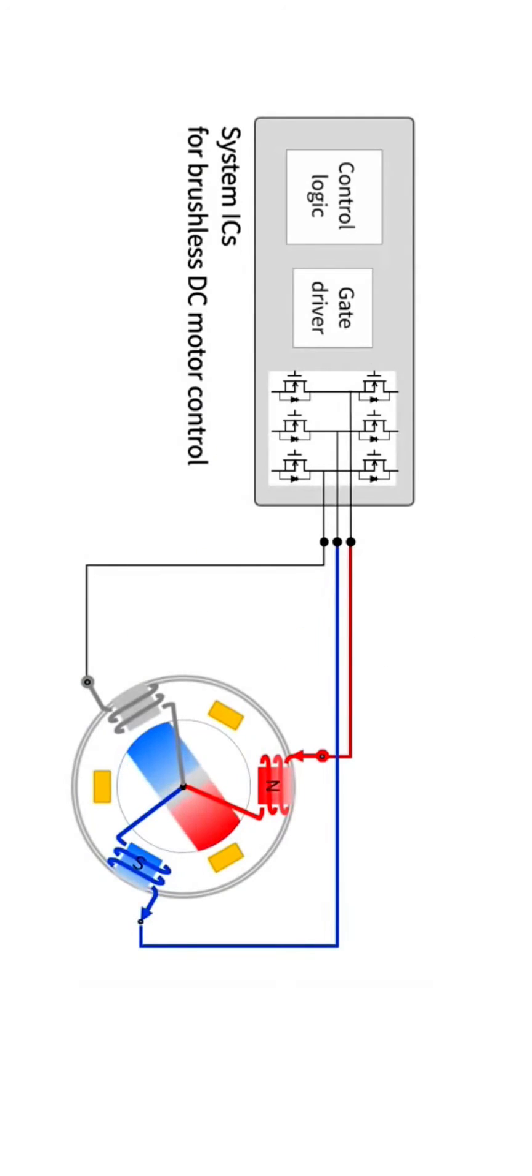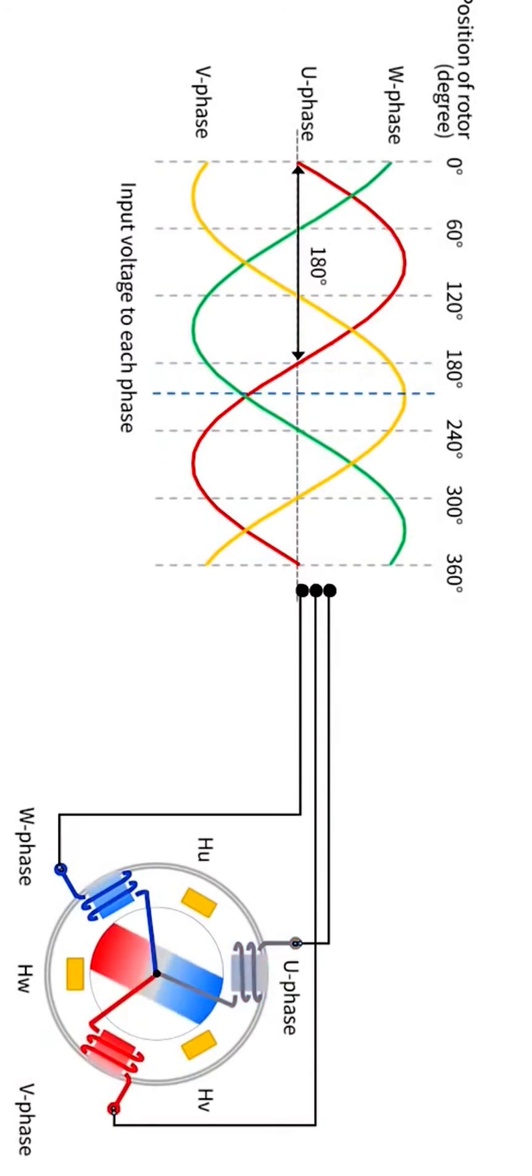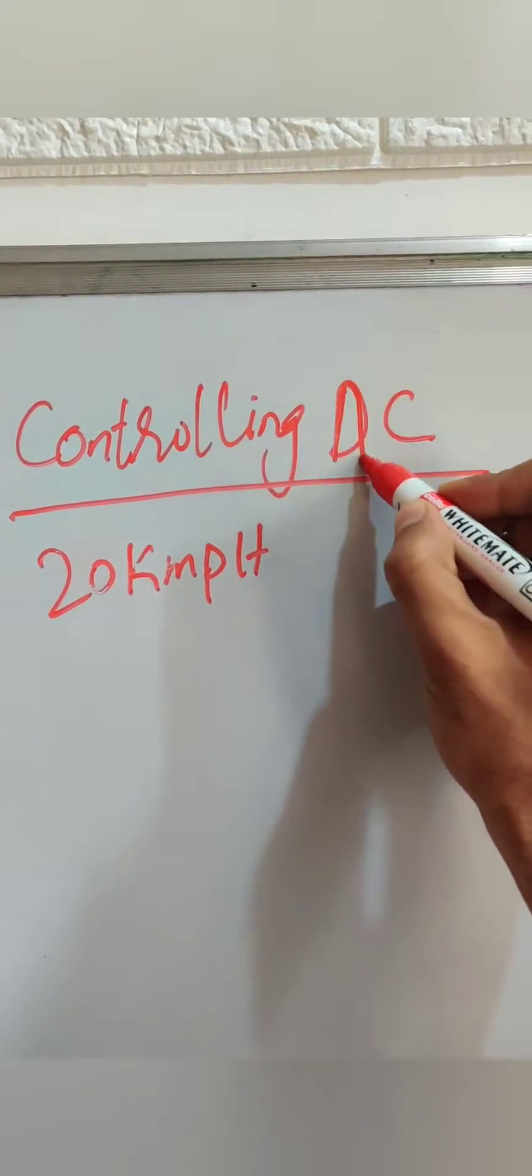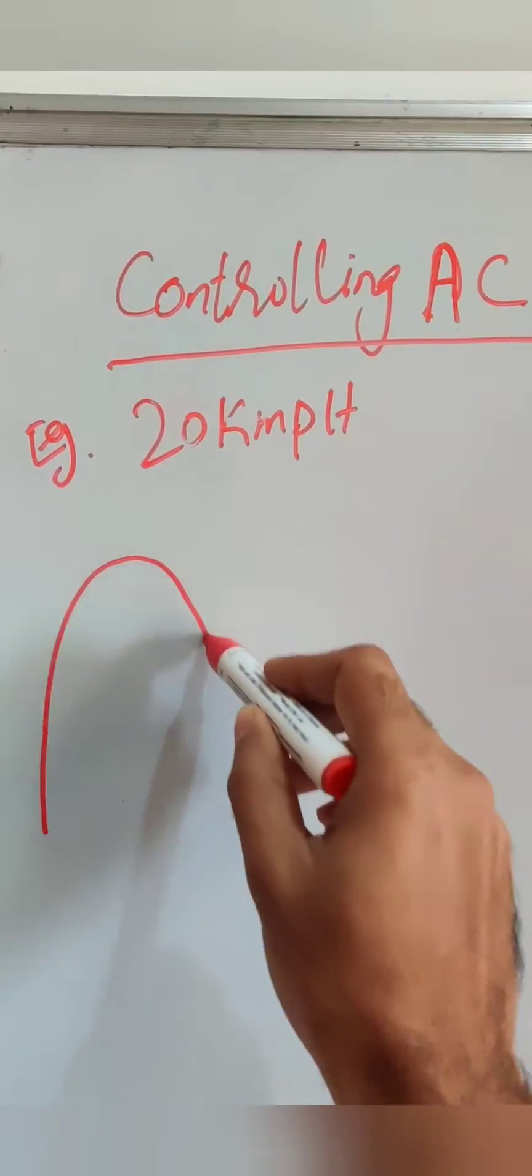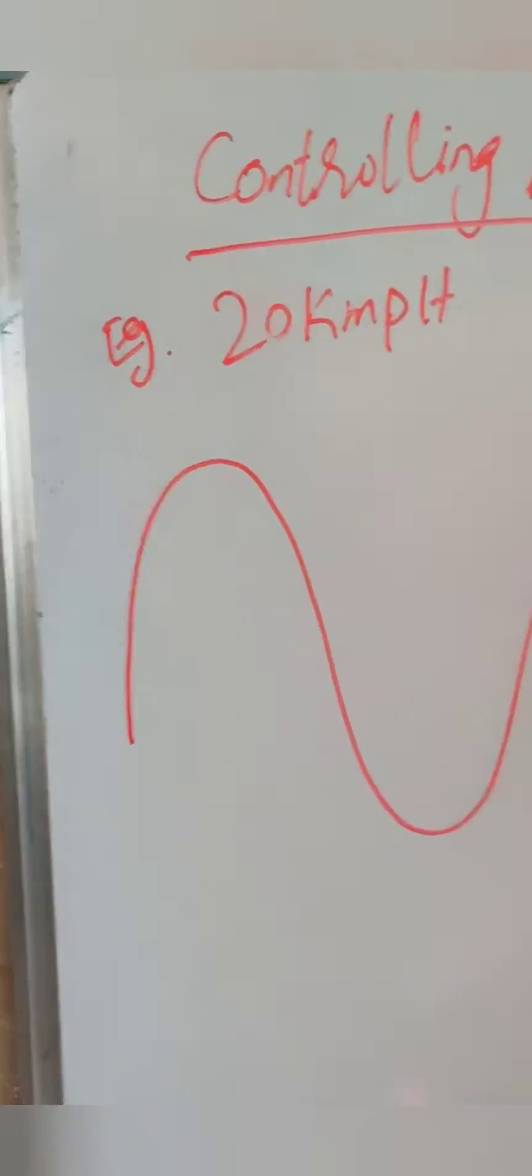To avoid this sparky stuff we can use BLDC brushless DC machine in which the commutator, the sparky stuff, is done through electronic switches. As the commutator was doing DC to AC, now we have to control the AC current directly.